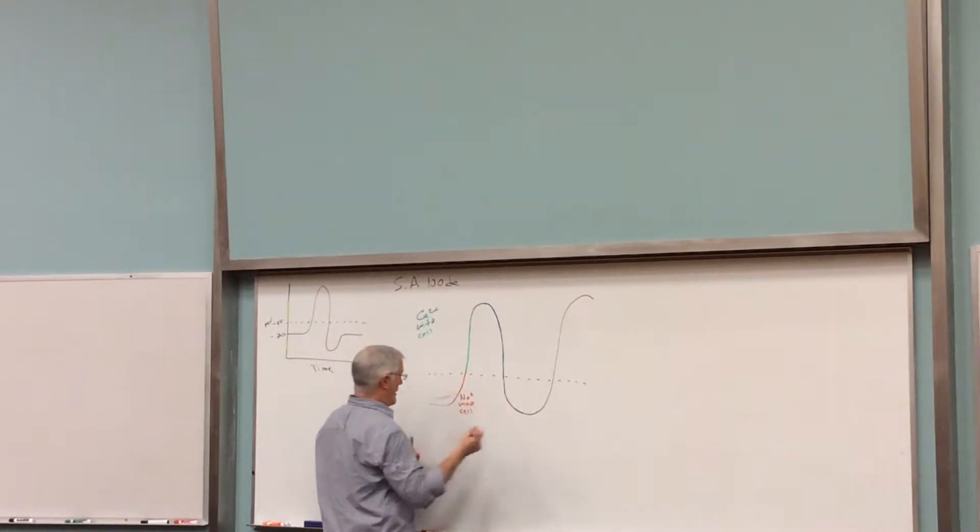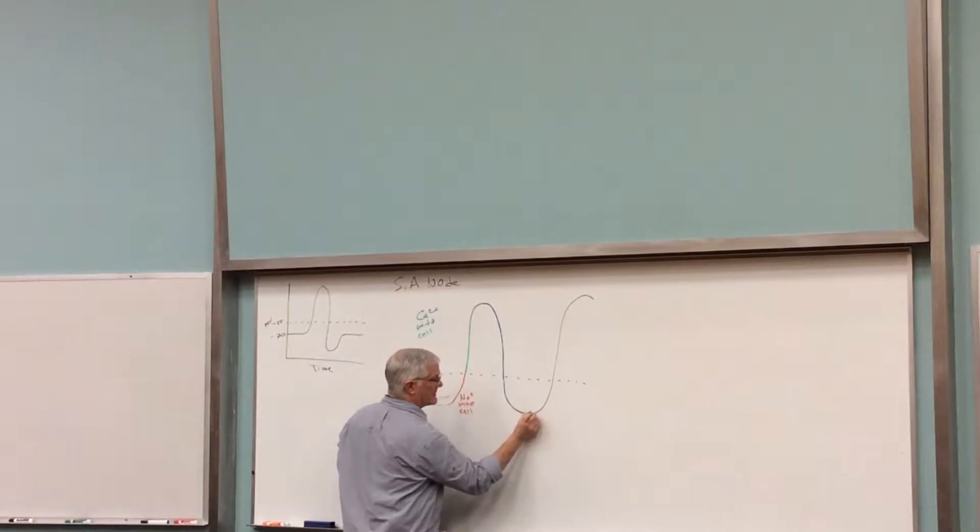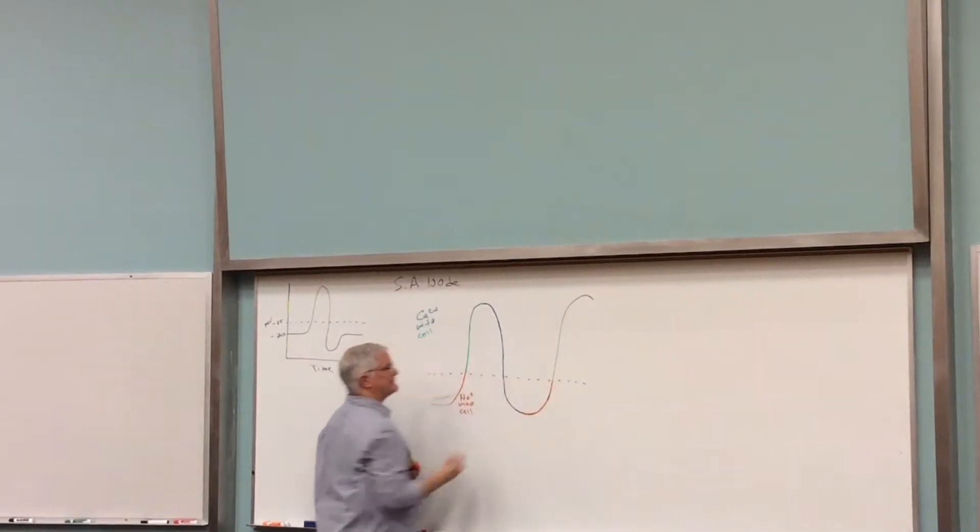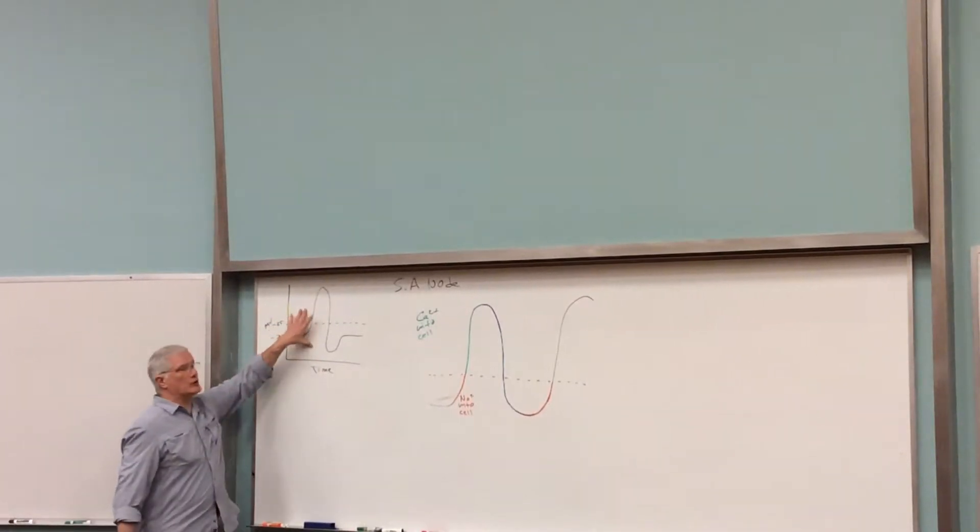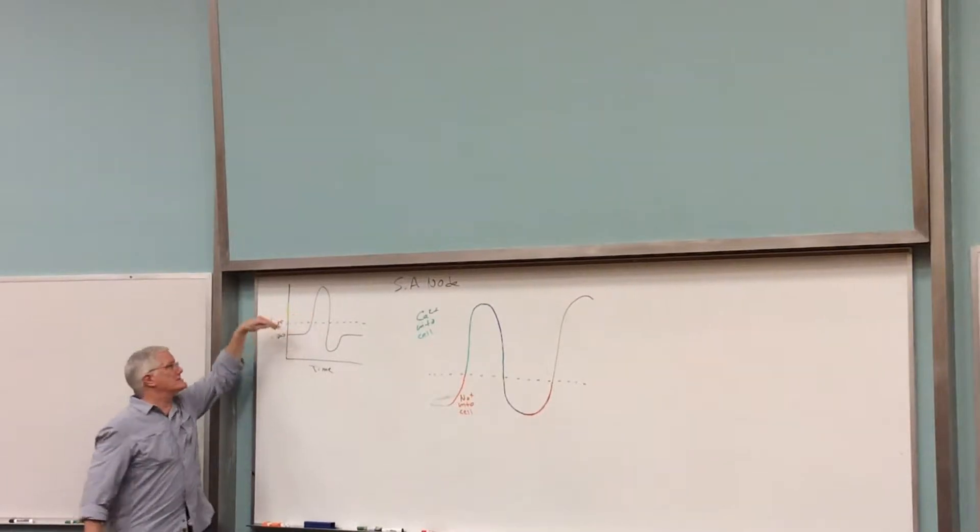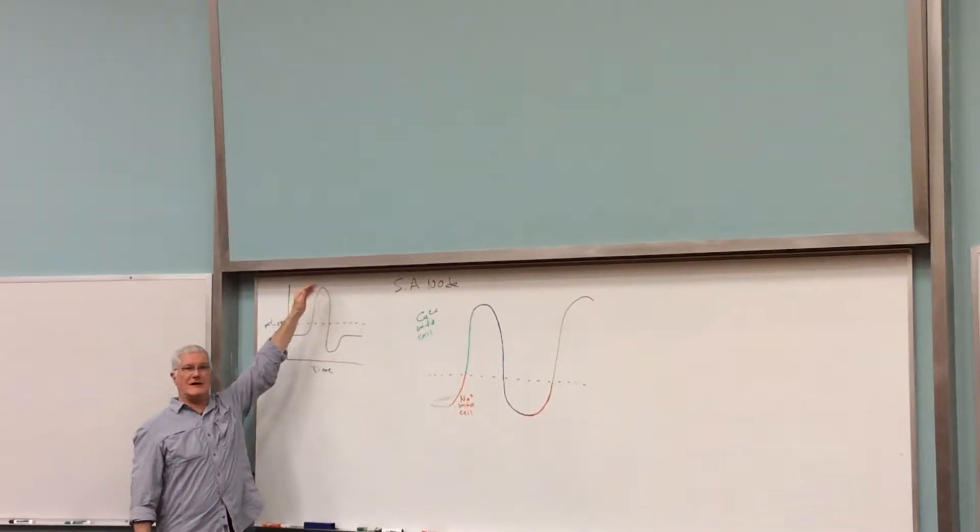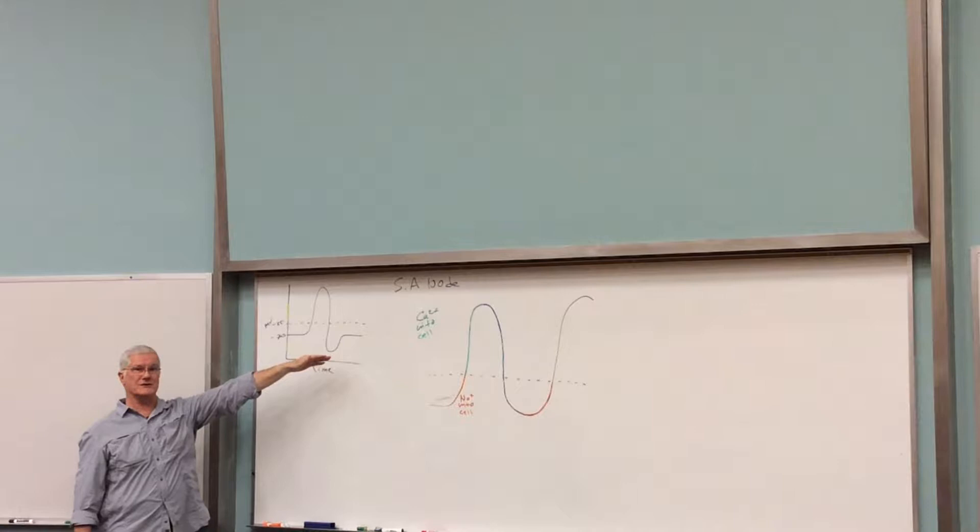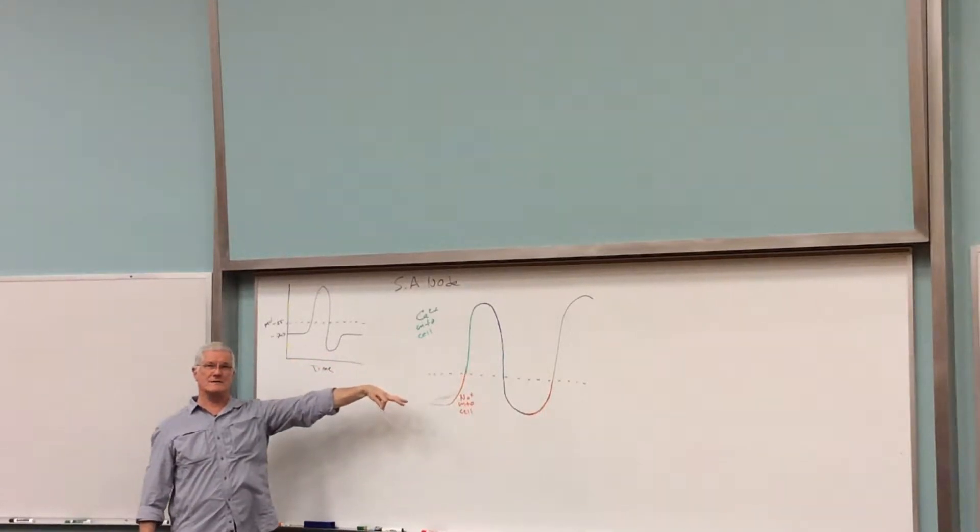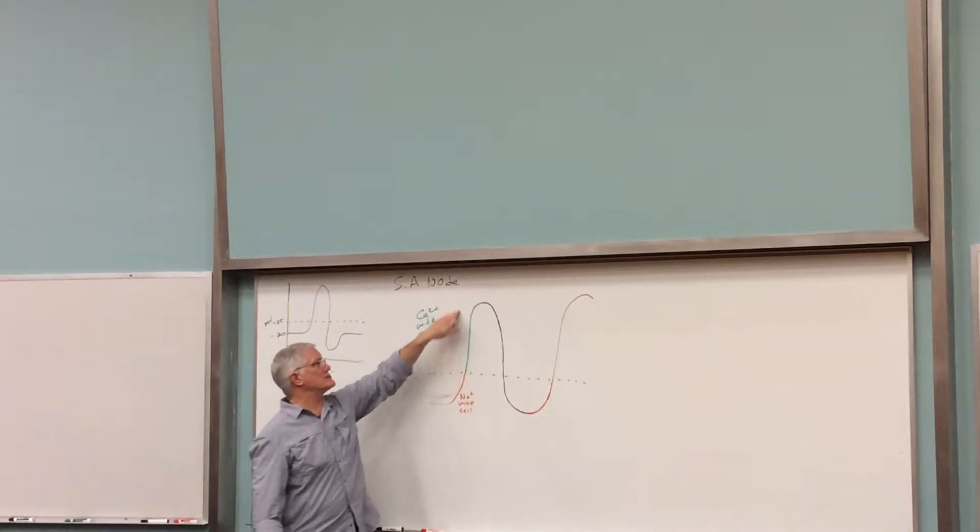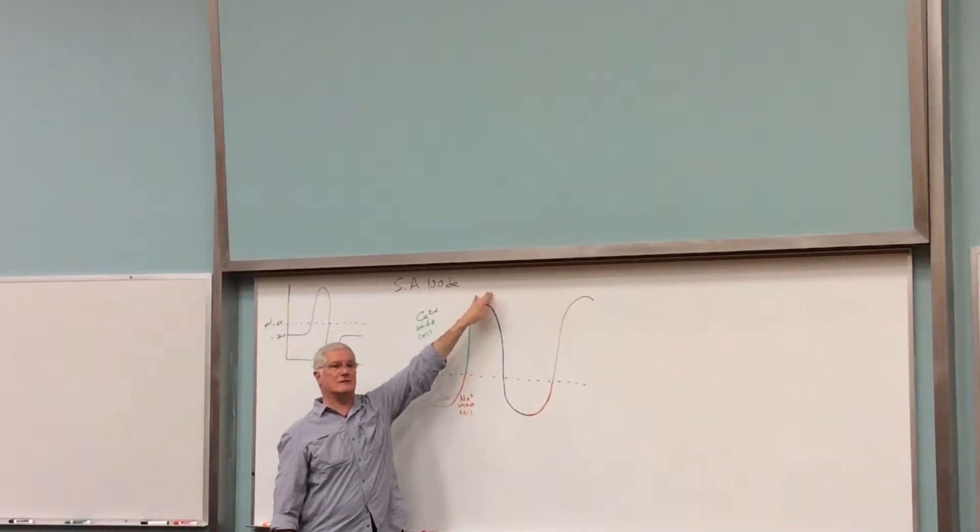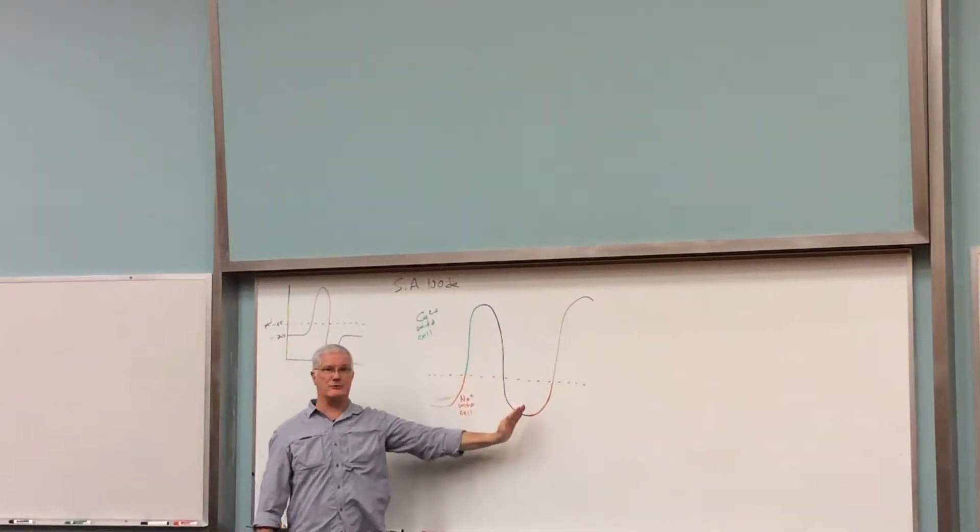Here's potassium diffusing out, and we come back to about here. Then we simply automatically start all over again. So instead of having just two ions play a role, sodium for depolarization and potassium for repolarization, here you have three ions.